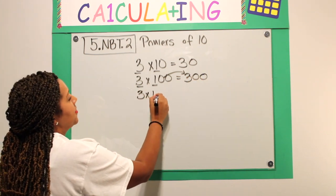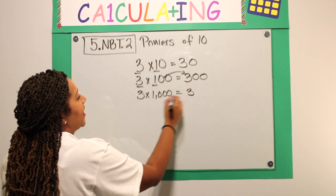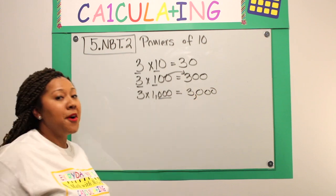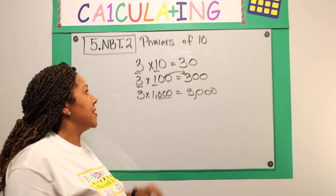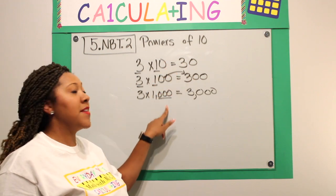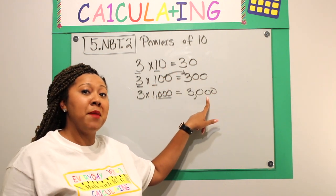3 times 1,000 is 3 times 1 again. And I'm adding those three zeros. So, the pattern will increase. All I'm doing is multiplying the base. And the amount of zeros I have in my factor, that is going to be the number of zeros in my problem.